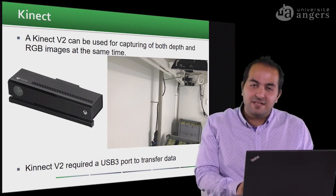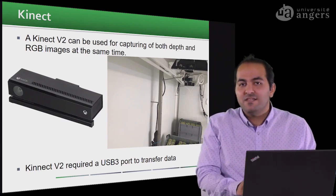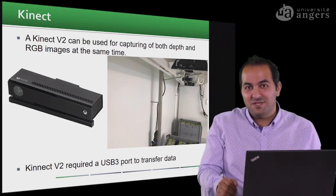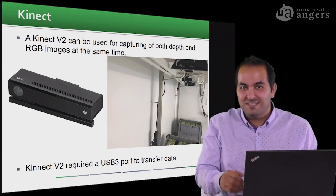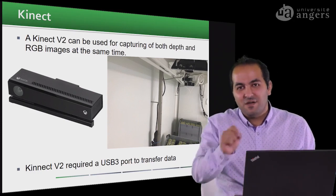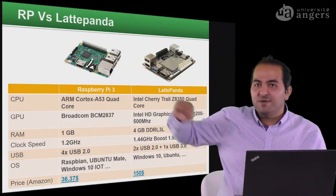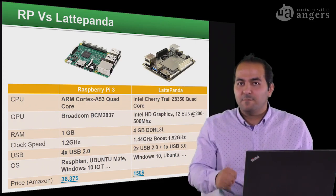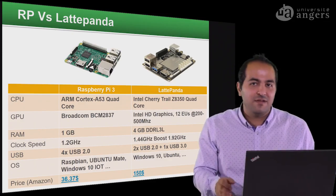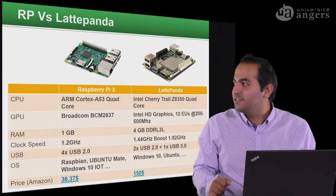We should consider that if we want to use these depth cameras, we need USB 3 ports. The Raspberry Pi only has four USB 2 ports, so we cannot use it for the Kinect version 2. We can use it for the Kinect version 1, also called Kinect 360, but if you want to use Kinect version 2, we need to switch to a computer that has USB 3 capability.